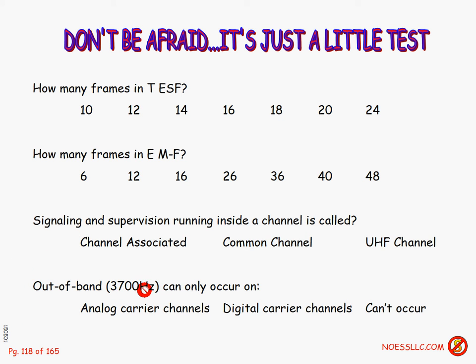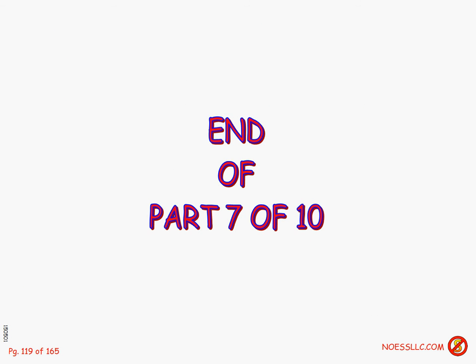Out-of-band 3,700 hertz can only occur on analog carrier channels — because digital systems have a front-end filter that only allows voice band 300 to 3,500 cycles, and you can't put 3,700 through. End of part 7. Thanks for watching. Hopefully I haven't completely messed up your mind — this was just the introductory level. When you get into really complicated systems and look at the overhead protocols, it's a much bigger handful. See some of you on part number 8.